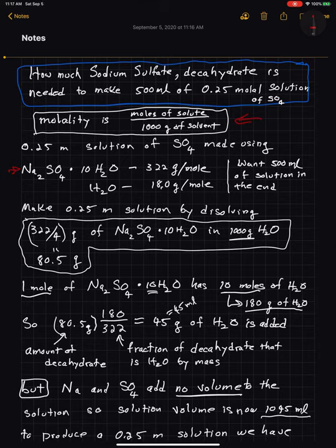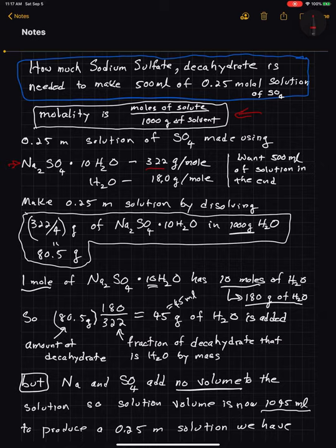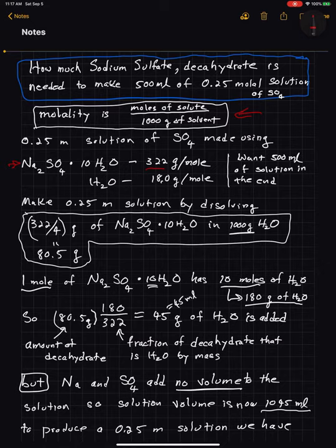I look up the molar mass for the decahydrate and to three digits it's 322 grams per mole. Now, I'm not sure if I'm going to need this next thing or not, but typically if I sit down and start to do a problem I'm not sure how to do, I write down everything that I might need. I've learned that over the years — I kind of write everything down and solve the jigsaw puzzle, put pieces together. I also looked up the molar mass for water and to three places it's 18 grams per mole. It turns out I'm going to need both of those things.